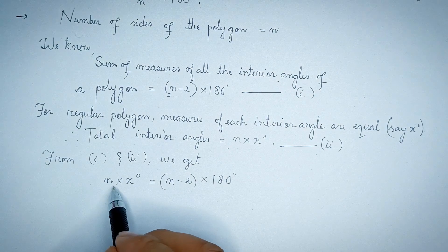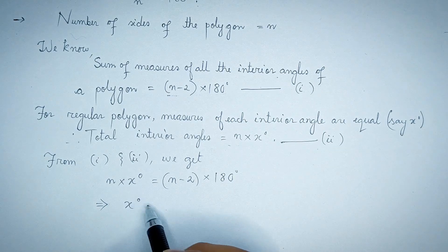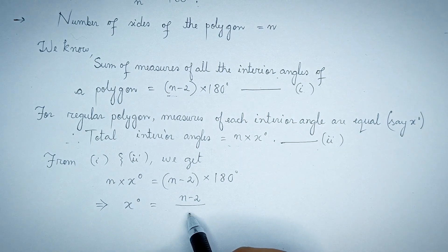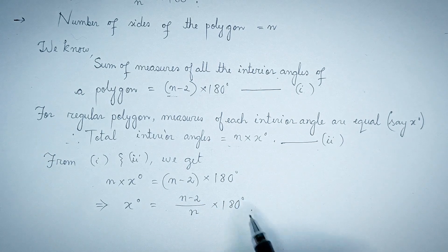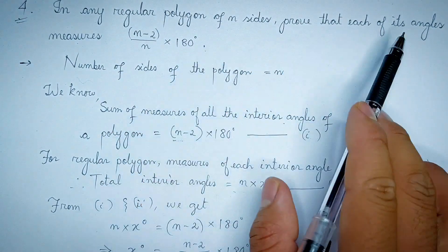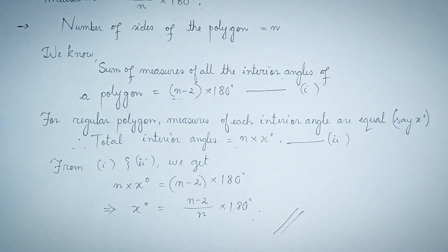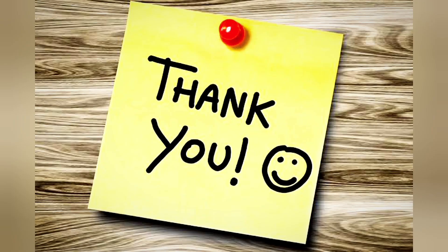For a regular polygon, the measure of each interior angle is equal to x degrees, which equals n minus 2 into 180 degrees divided by n. Thank you.